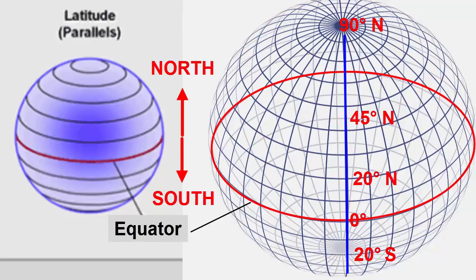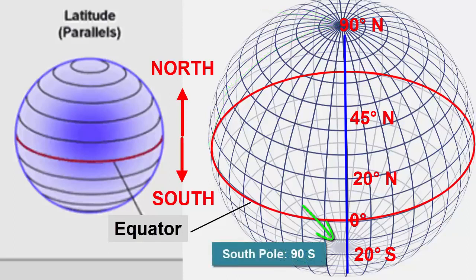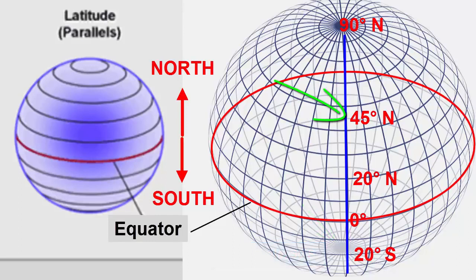For example, if we travel to the north pole, we have traveled one-quarter of a circle away from the equator, or 90 degrees north latitude. The south pole is at 90 degrees south latitude. Halfway in between the equator and the poles, we travel 45 degrees north or south.